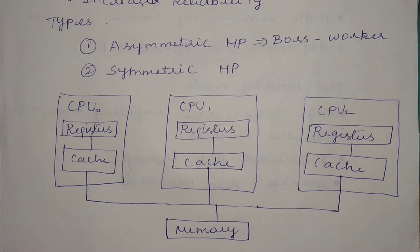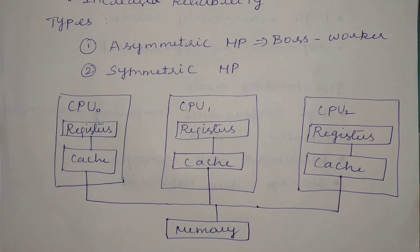In symmetric multiprocessing, there will not be any such relationship between processors. Each and every processor will be assigned some specific task and all processors will work on it. That is what symmetric multiprocessing. So what is the major difference between these two?